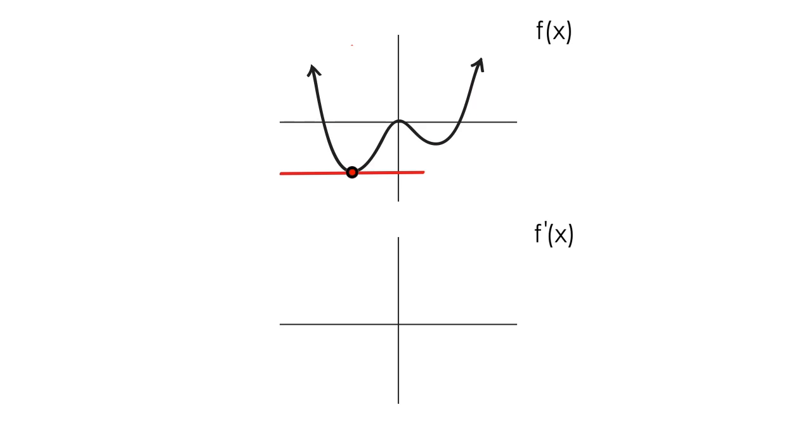Since we're trying to develop a graph of the derivative or the slope of the tangent line and the slope at this point is zero, I need to place a point at zero on the x-axis of the graph of the derivative. This says at this point on the graph of the original function the derivative is equal to zero.